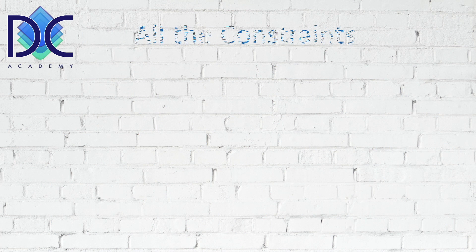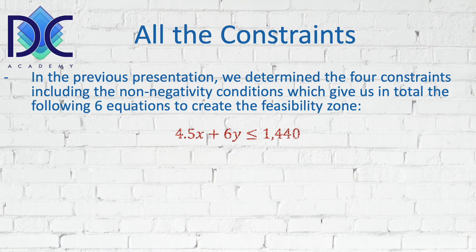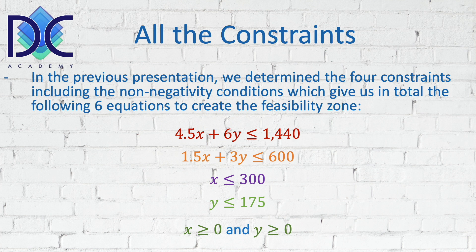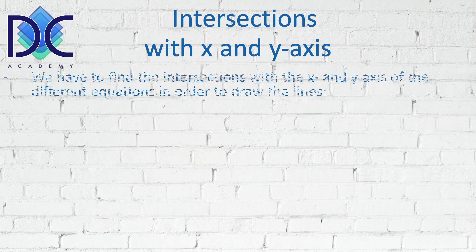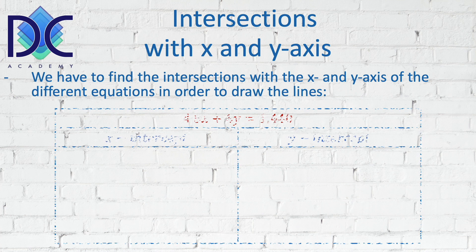Let's have a look at the constraints we had before. We found six equations representing the constraints: 4.5x + 6y ≤ 1440; 1.5x + 3y ≤ 600; x ≤ 300; y ≤ 175; and the two non-negativity conditions where x ≥ 0 and y ≥ 0. What we have to do now is find the intersections with the x and y axes of those different lines so we can draw them.